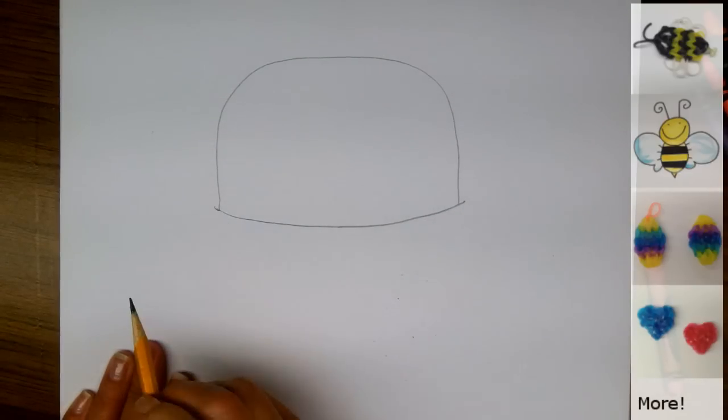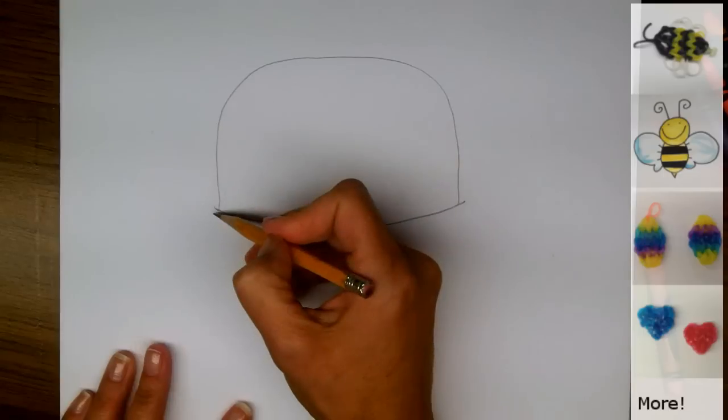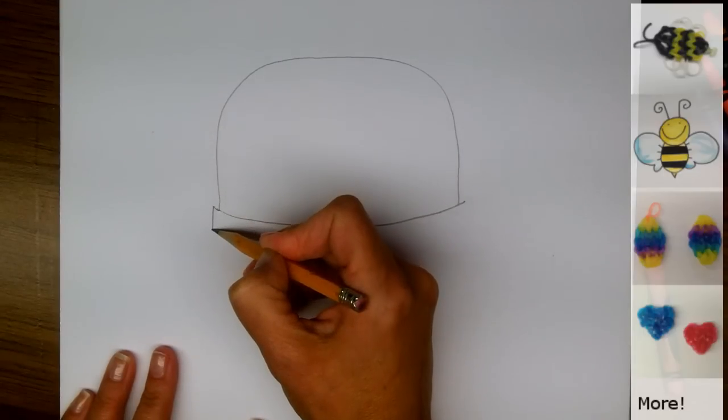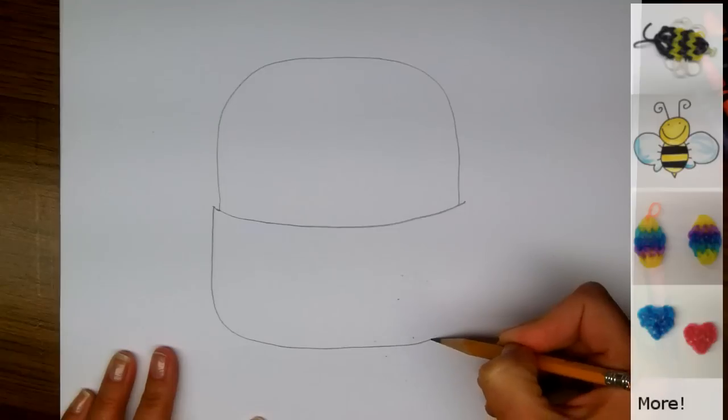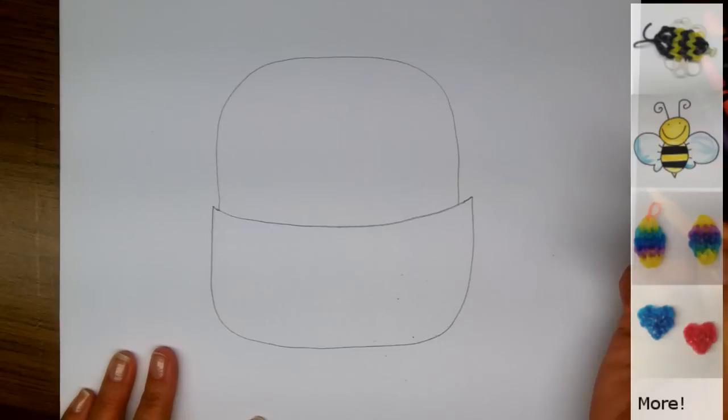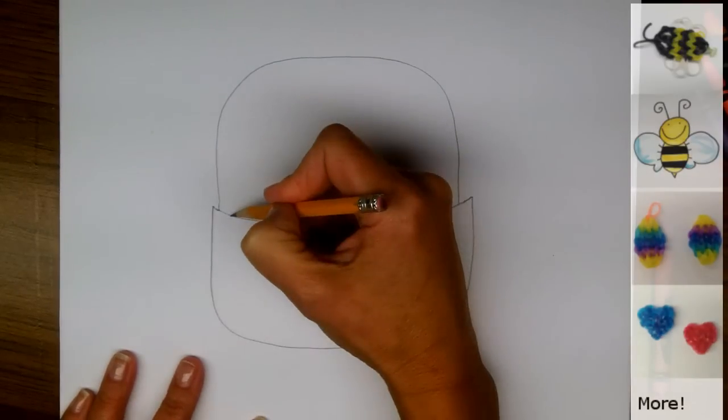Now we'll draw the basket, so we're going to make a u-shape that comes back up and connects here. So now we need to draw the inside of our handle. It's going to come up and around and back down.